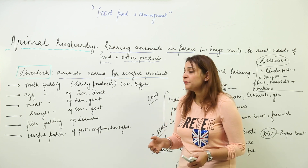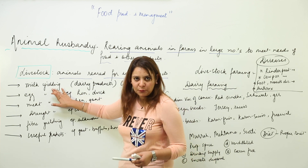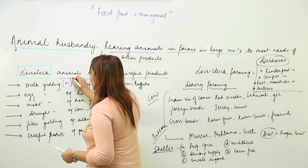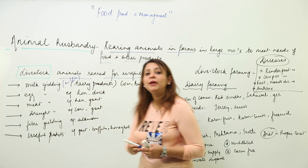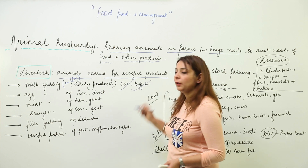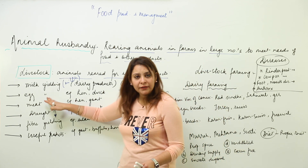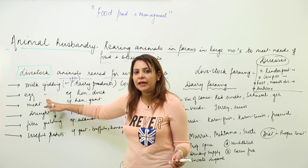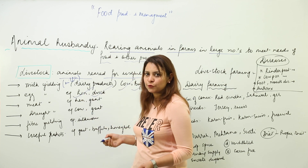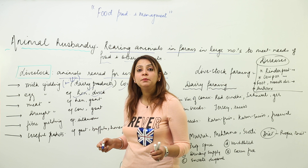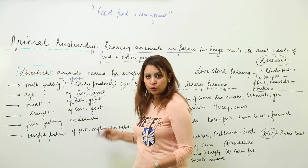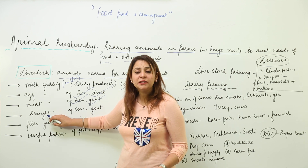We have milk-yielding animals, also called dairy animals — those which give milk or dairy products, like cow and buffalo. We have egg-yielding animals, which lay eggs, such as hen and duck. There are also meat-yielding animals that provide meat, for example hen and goat.